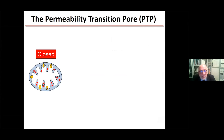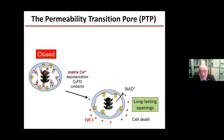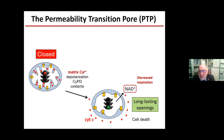The permeability transition pore is an inner membrane channel that, when open for a long time — the key trigger is matrix calcium, but also oxidants — can cause mitochondrial swelling with breakdown of the outer membrane, releasing cytochrome C and other pro-apoptotic factors including AIF. One critical point: NAD is also lost, and when this happens, respiration goes down. This is key: how much damage in muscular dystrophy is due to decreased respiratory capacity? You might have spare muscle that can't work because it can't respire.